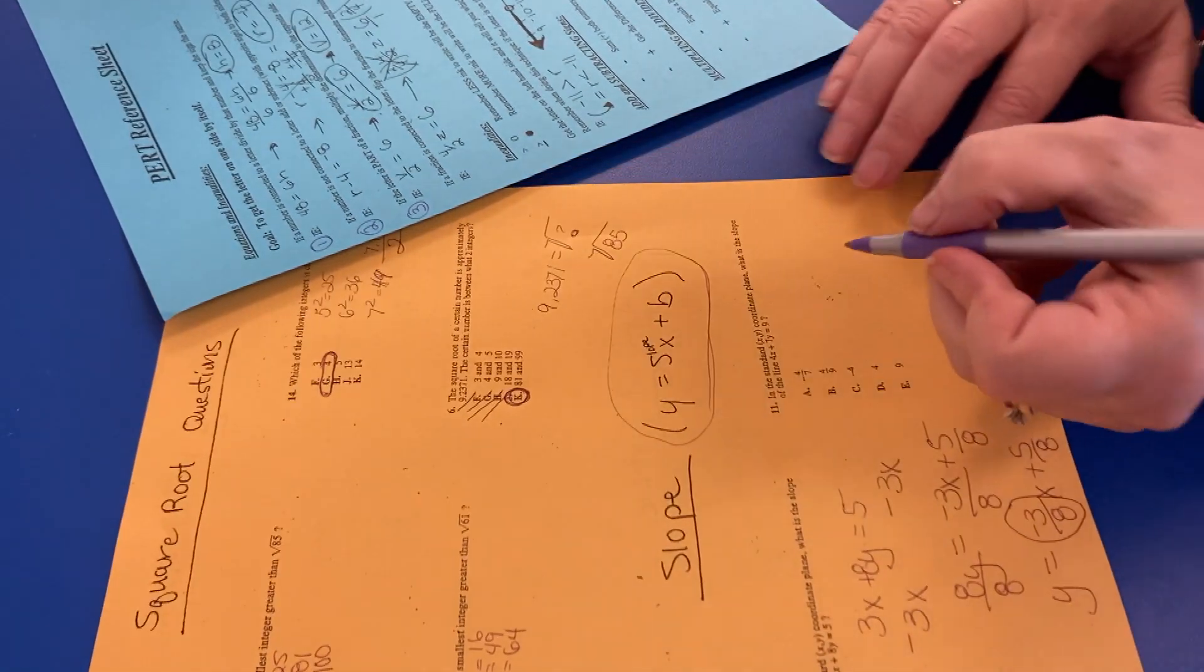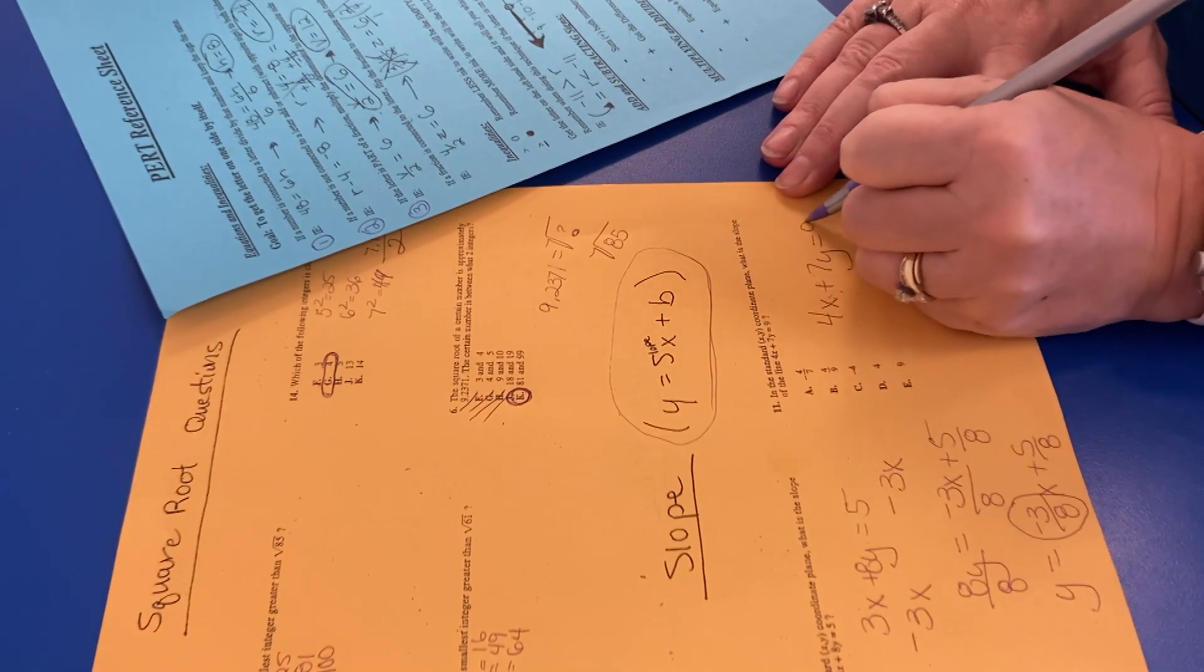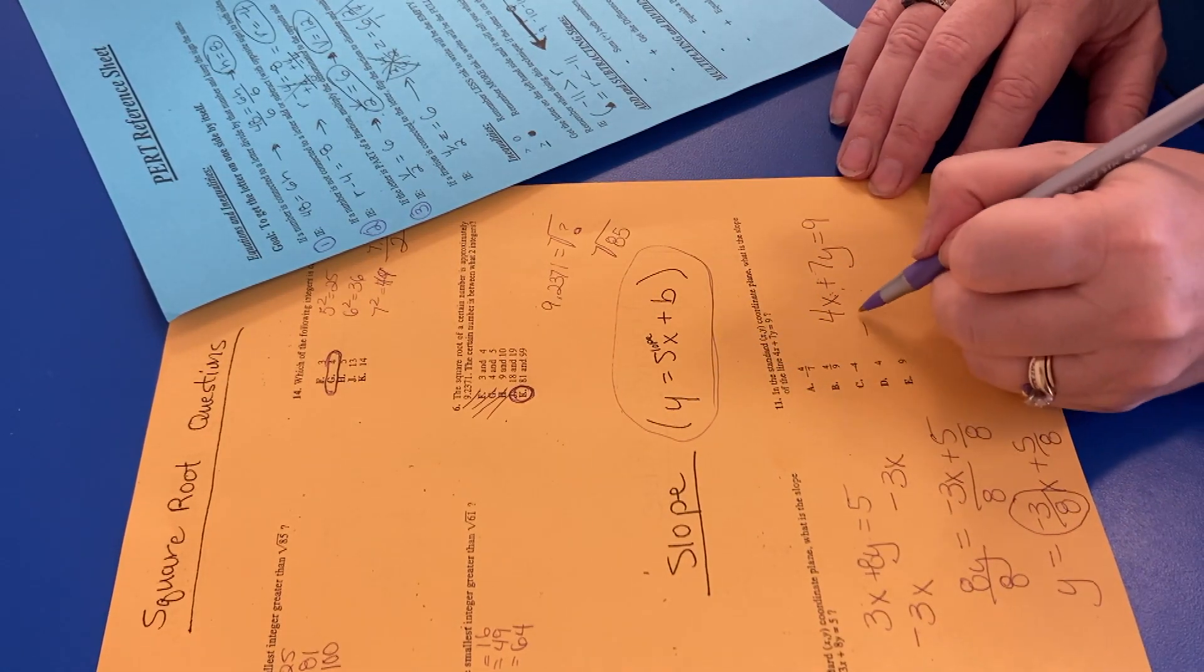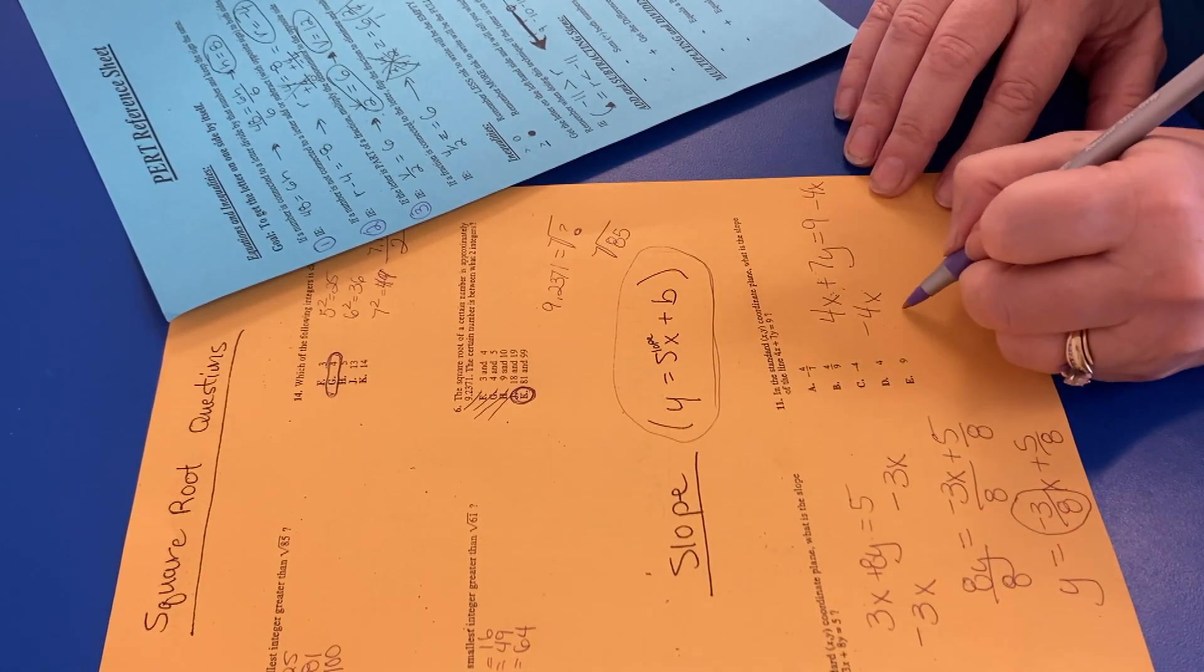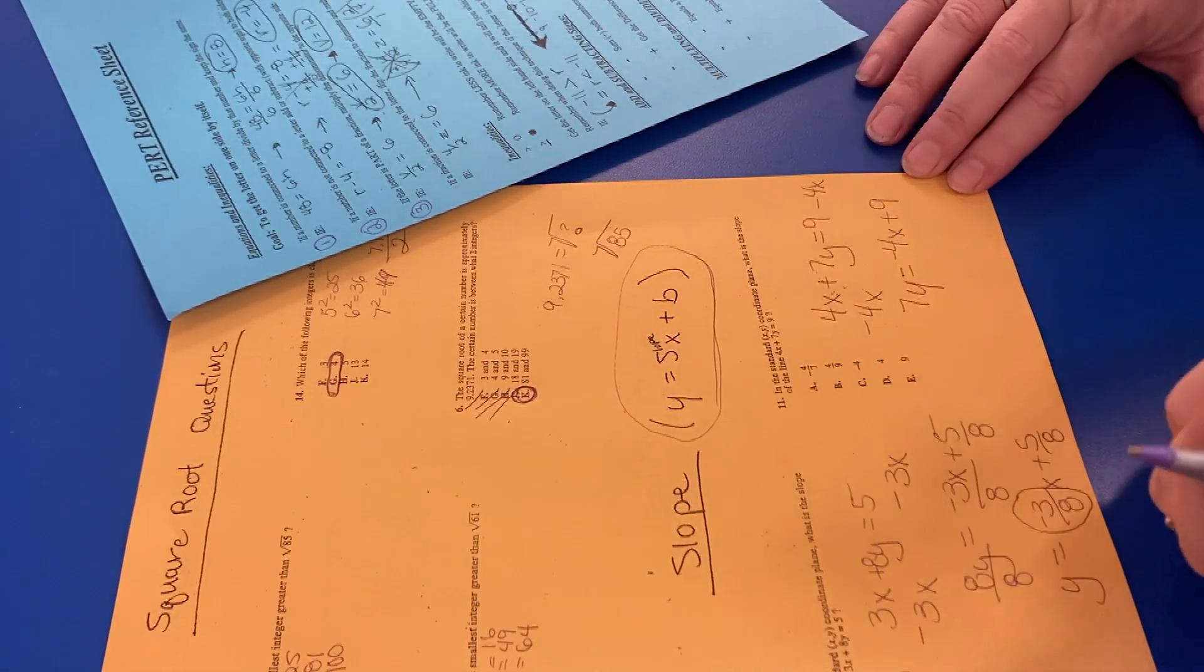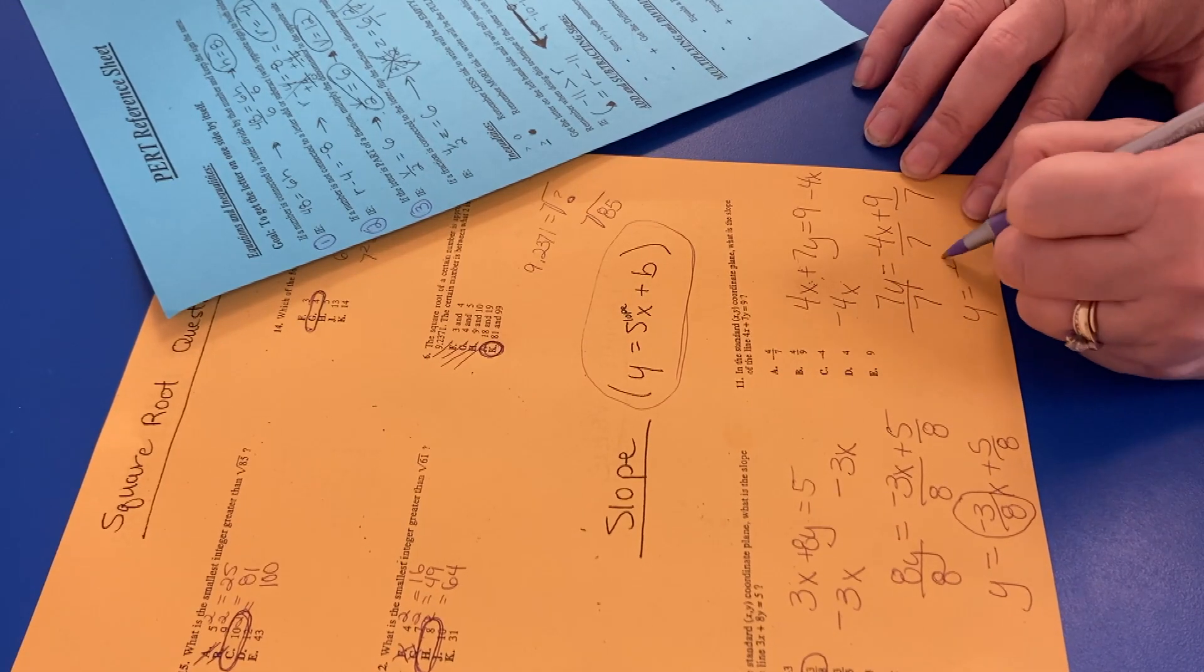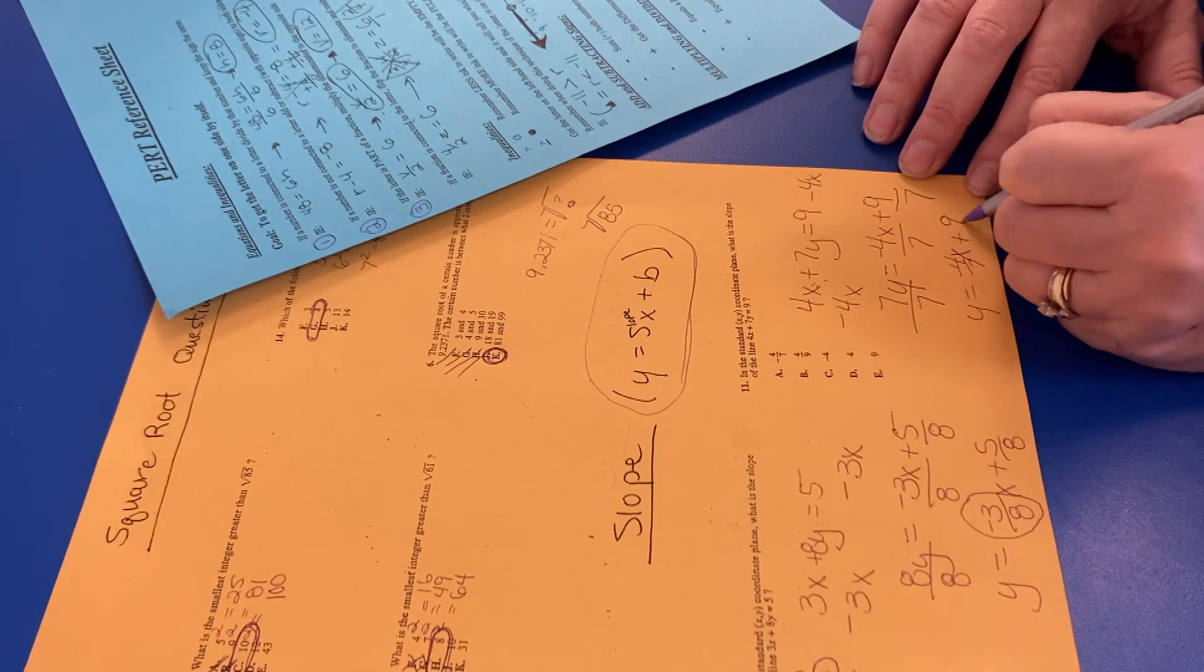Okay, now we're going to do that same thing. We're going to write it out. 4X plus 7Y equals 9. Turn off the video and see if you can do this on your own. What we're going to do is try to get Y by itself. So we're going to go negative 4X minus 4X, right? So we got 7Y equals negative 4X plus 9. Now we got to divide by 7, divide by 7, divide by 7. Y equals negative 4 sevenths X plus 9 over 7.